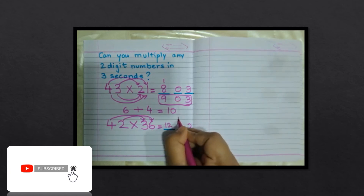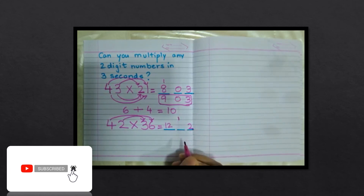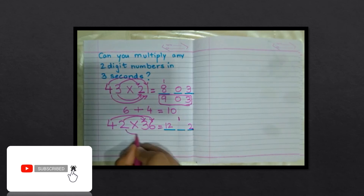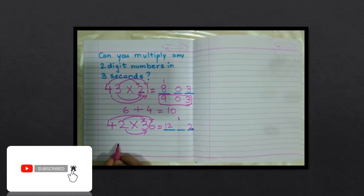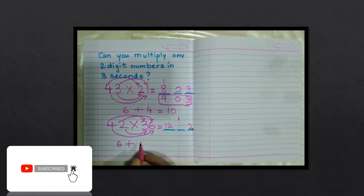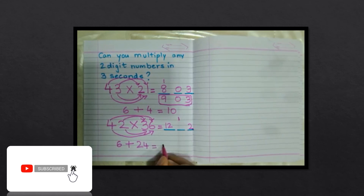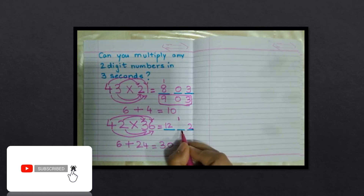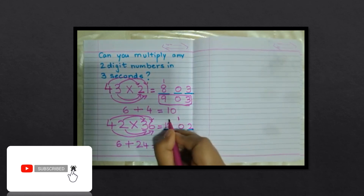The next step is to cross multiply: two threes are six, plus four sixes are twenty-four, which equals thirty. You cannot write thirty, so write zero and carry over three.